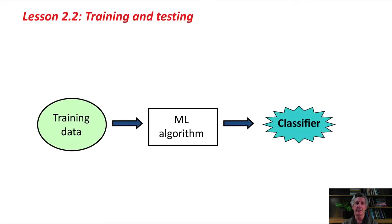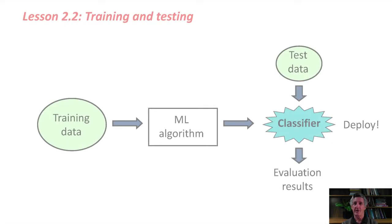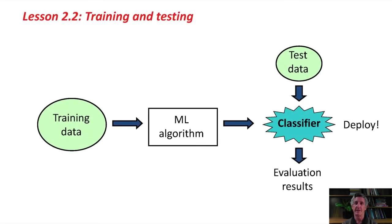Here's a situation. We've got a machine learning algorithm, and we feed into it training data, and it produces a classifier, a basic machine learning situation. With that classifier, we can test it with some independent test data. We can put that into the classifier and get some evaluation results.